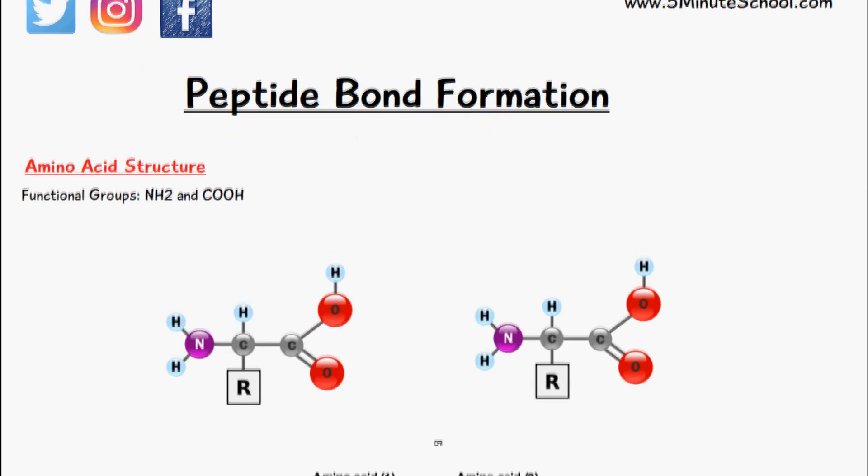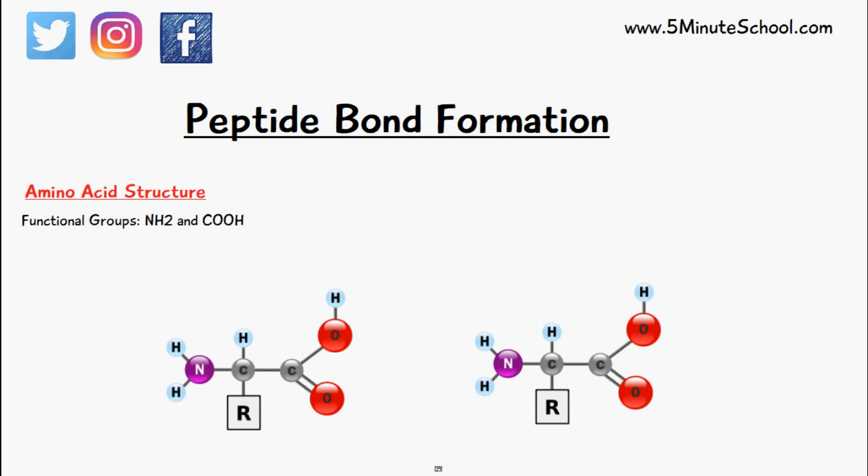The first is water, and the key thing you need to know about amino acids is that they have two functional groups. We have this NH2 group here, or an amine group, and we have this carboxyl group which is on the right side.